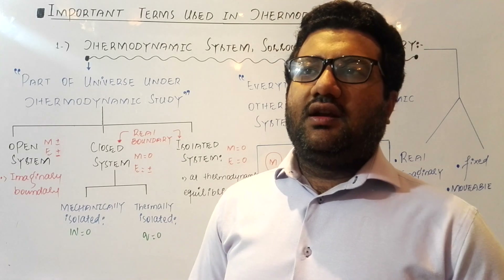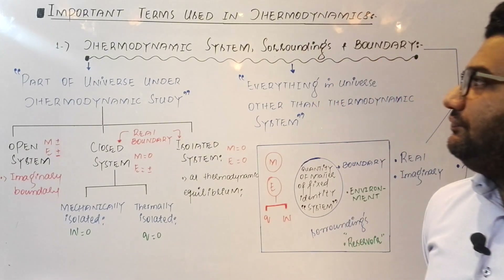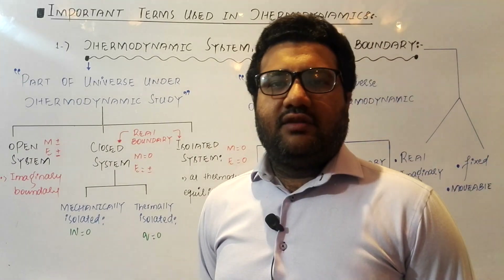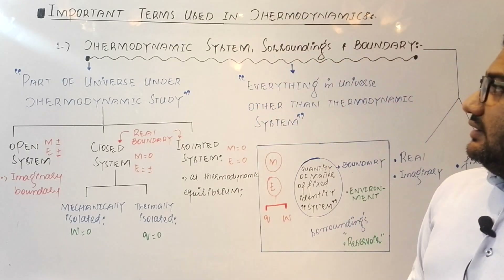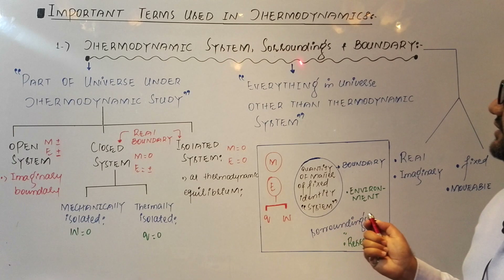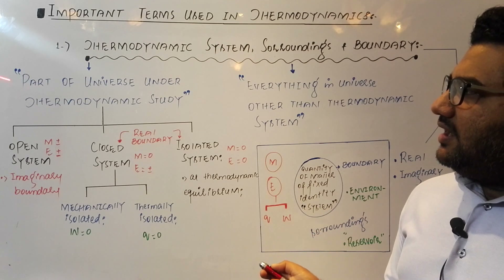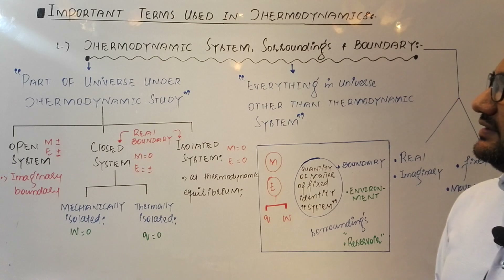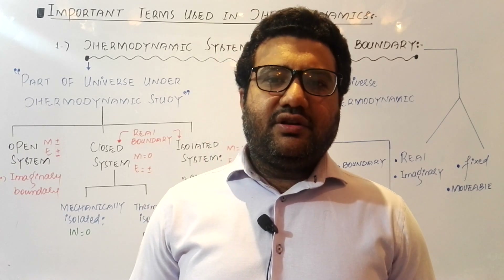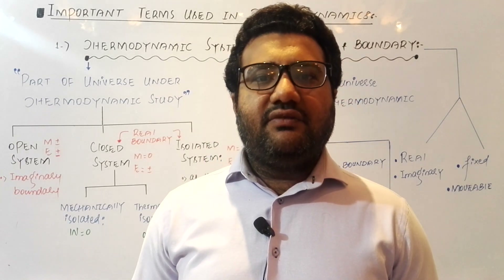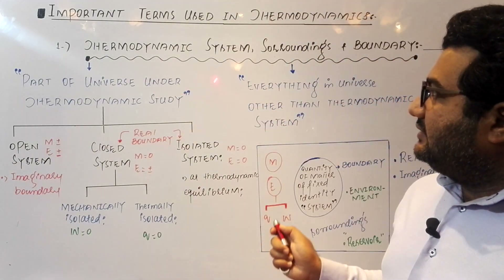Welcome everyone. Our next topic for today is some important terms used in thermodynamics. In order to understand thermodynamics in detail, you must have a good concept of all these terms. The first term is thermodynamic system, surroundings, and boundary. A thermodynamic system is any part of the universe under thermodynamic study — the part in which we are observing the heat changes involved.